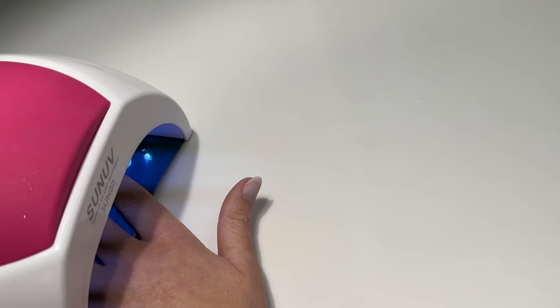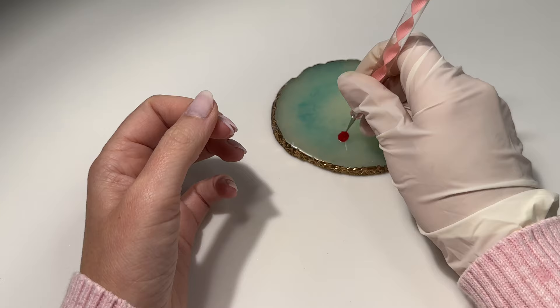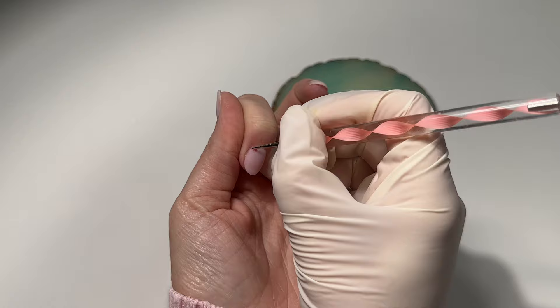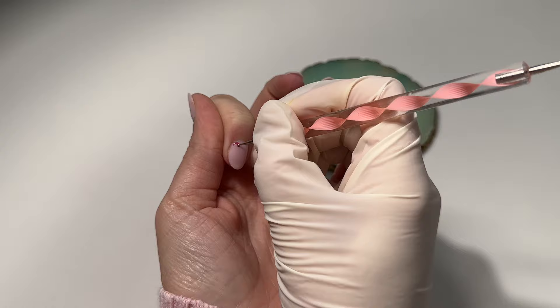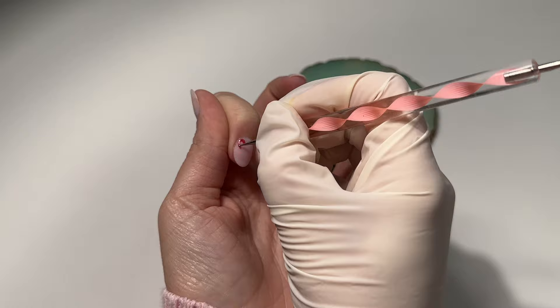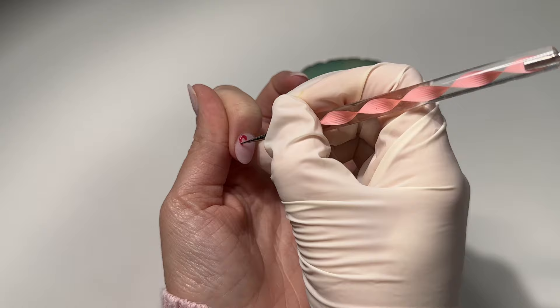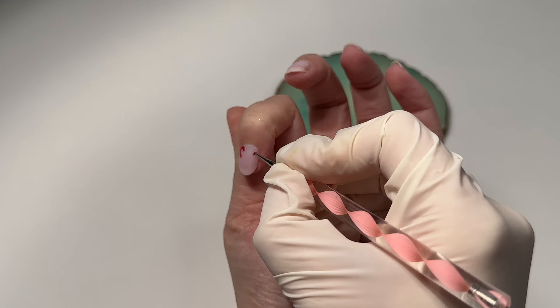We're going to start on our candy cane nails. I'm also going to use my dotting tool for this as well. I start by just doing a U shape, just kind of dragging and floating that red into a U, and then I do a line. That's it, it's super easy. If you've been looking for a very easy Christmas design, this is it. It's very simple shapes to make and I'm just going to do that across the nail.